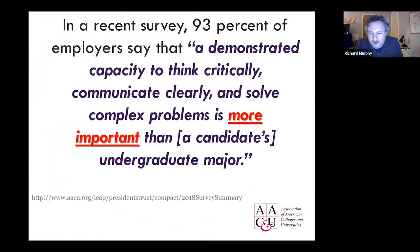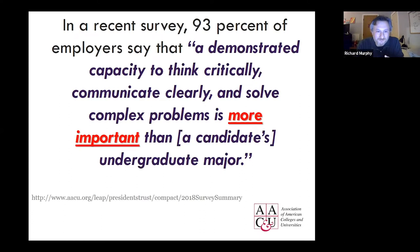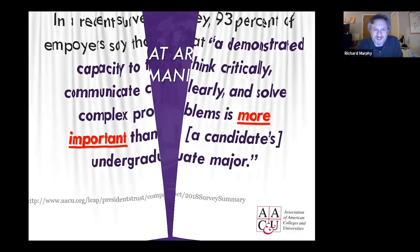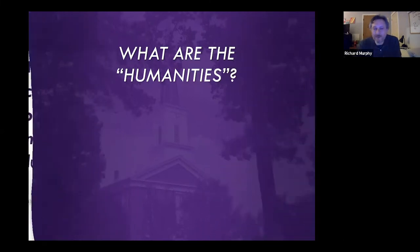According to the American Association of Colleges and Universities in their 2018 survey, about 93% of employers — almost all of them — said they're looking for a demonstrated capacity to: one, think critically; two, communicate clearly; and three, solve complex problems. Those three skills are actually more important than a candidate's undergraduate major. They're not looking at what the degree says — they're looking for the skills. And the humanities really focus on those.